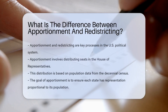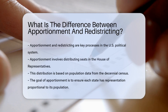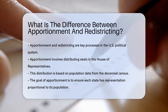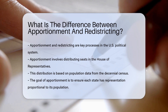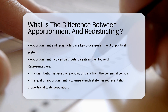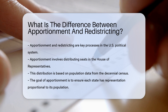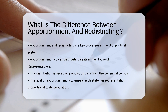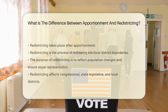Apportionment and redistricting are key processes in the U.S. political system. Both are essential for fair representation. Apportionment involves distributing seats in the House of Representatives. This distribution is based on population data from the decennial census. The goal is to ensure each state has representation proportional to its population.